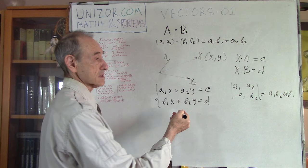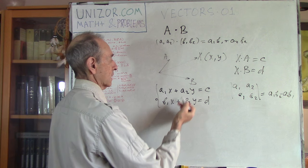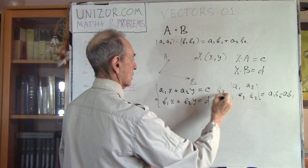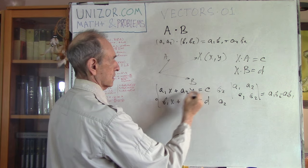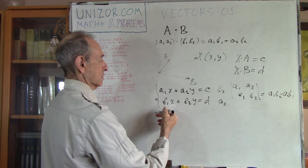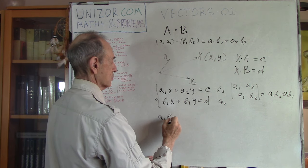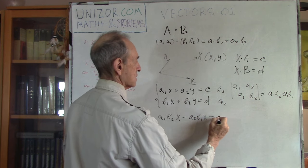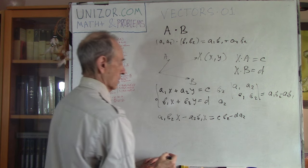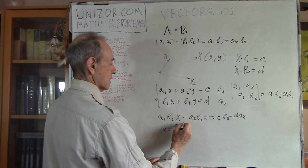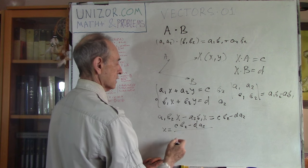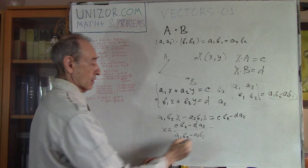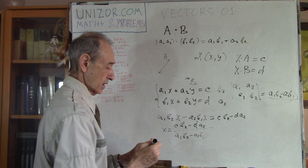To solve for X, multiply the first equation by B2 and the second by A2 to equalize the Y coefficients, then subtract. You get: (A1·B2 minus A2·B1)·x equals C·B2 minus D·A2. Therefore X equals (C·B2 minus D·A2) divided by (A1·B2 minus A2·B1), which is the determinant of the matrix. Similarly, you can solve for Y. That's the simple problem — a system of linear equations.